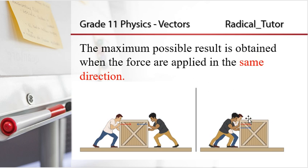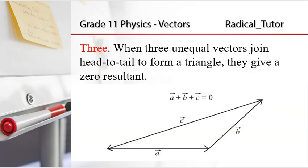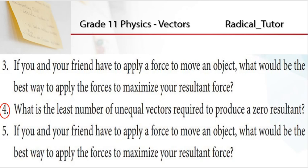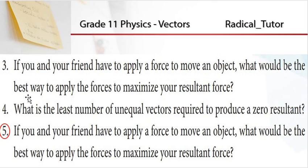Question 4: What is the least number of unequal vectors required to produce a zero resultant? The least number of unequal vectors needed is three.